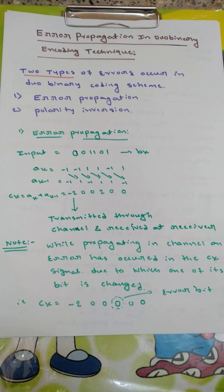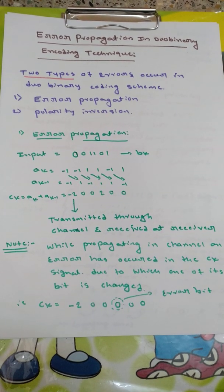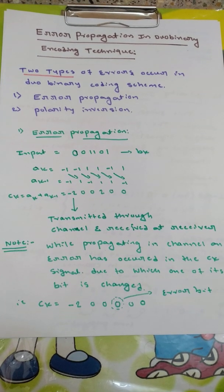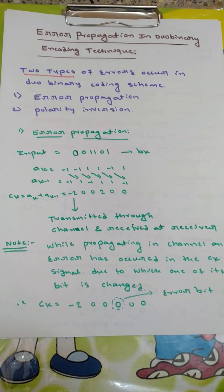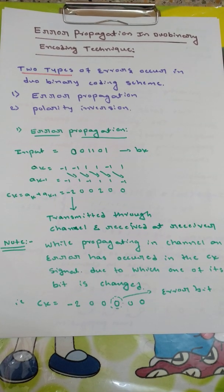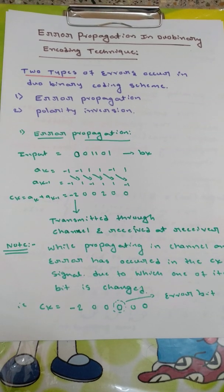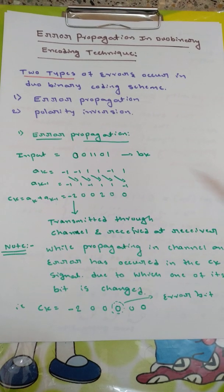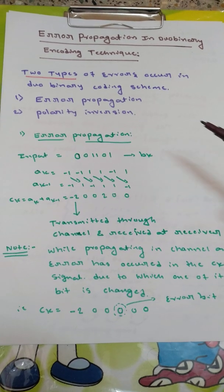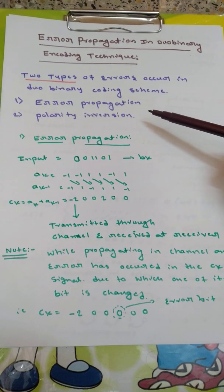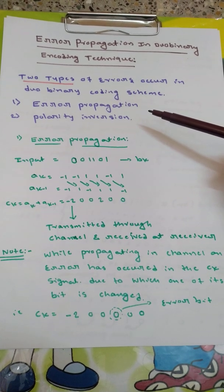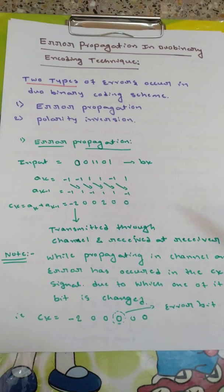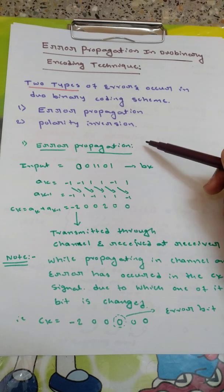In previous videos I have discussed about what is mean by duobinary encoder, what is mean by duobinary decoder and how they are working, their circuit diagram. In those videos I said there will be two types of errors which will be commonly occurring in the duobinary encoder and decoding circuit. And those two errors are error propagation and polarity inversion. We will see what is mean by error propagation and what is mean by polarity inversion in this video. First one is error propagation.